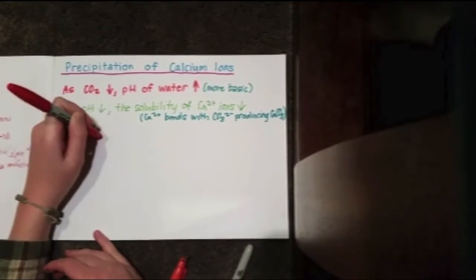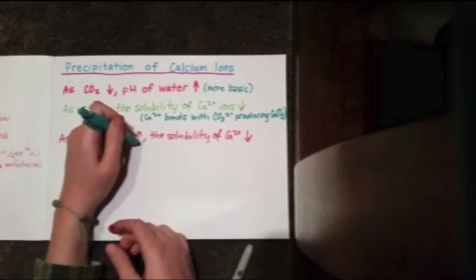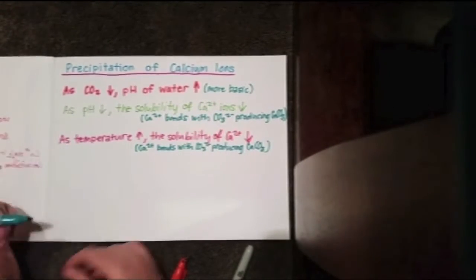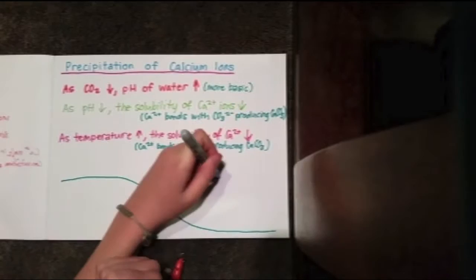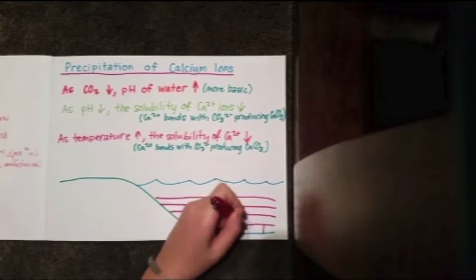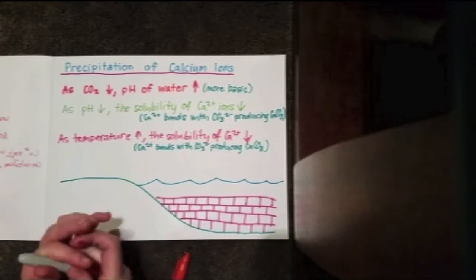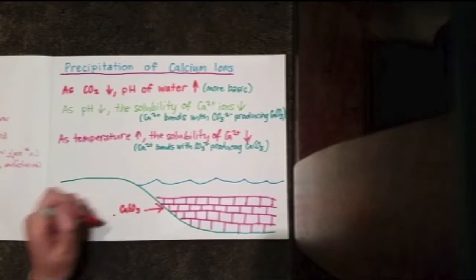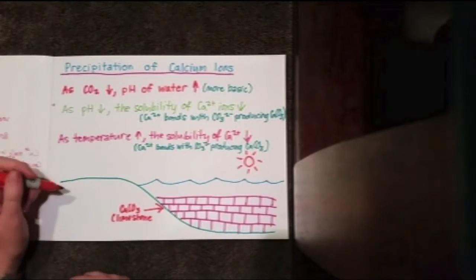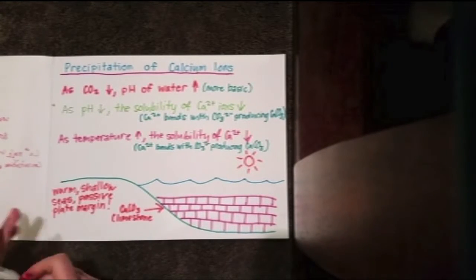Limestone! So lastly, we have temperature as a factor, and when it goes up, the solubility of the calcium ions goes down. So the best environment for calcium carbonate to precipitate in is warm, shallow seas on a passive plate margin, which is drawn at the very bottom right there. And see how they fall in love — they've found their soulmates.